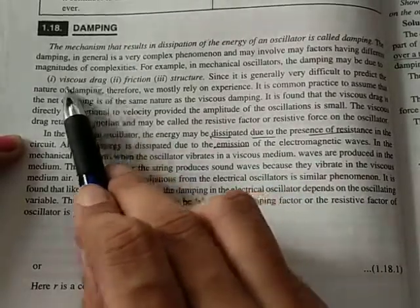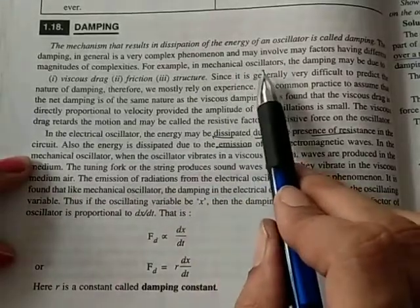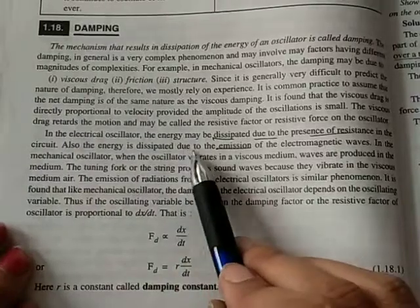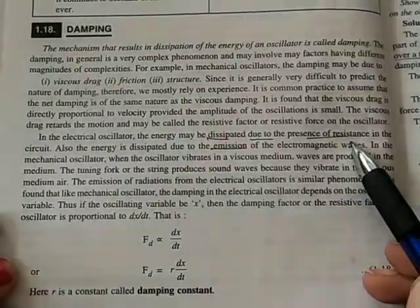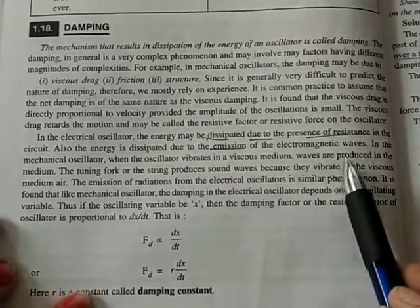This is the case of the mechanical oscillator. If we are taking the case of electrical oscillator, the energy may be dissipated due to the presence of resistance in the circuit, and also it is dissipated due to the emission of electromagnetic waves.